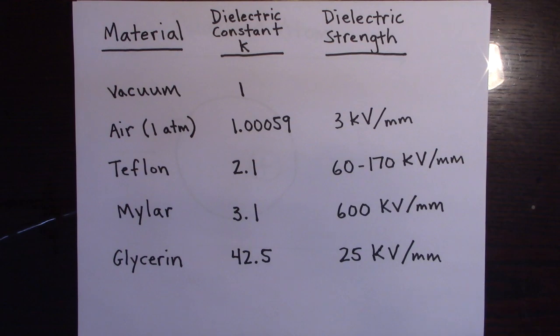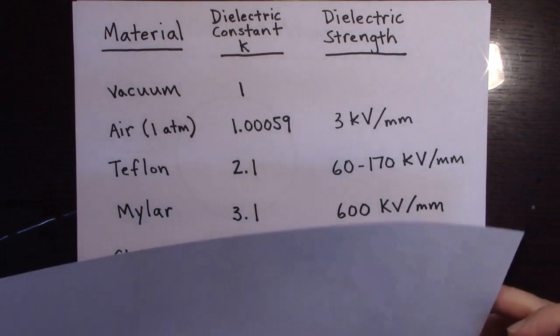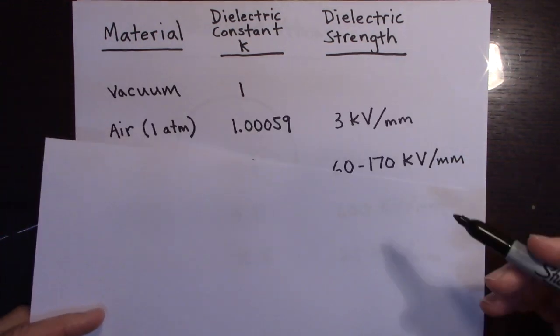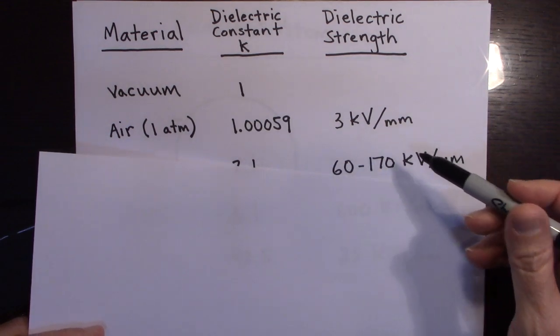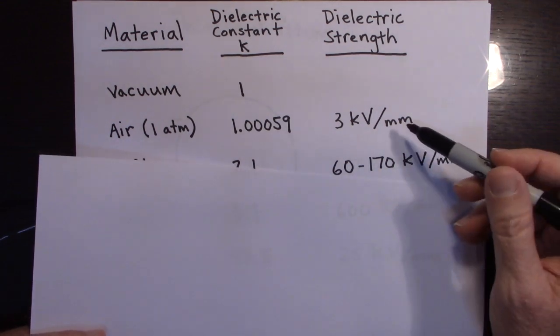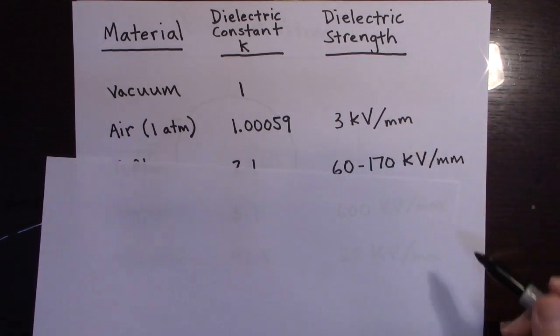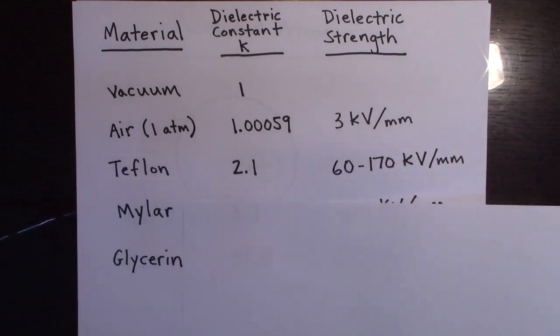So that's why capacitors will tell you, not just the capacitance, written on every capacitor is the capacitance plus the maximum voltage you can put on it, that you can safely put on it before you get breakdown.